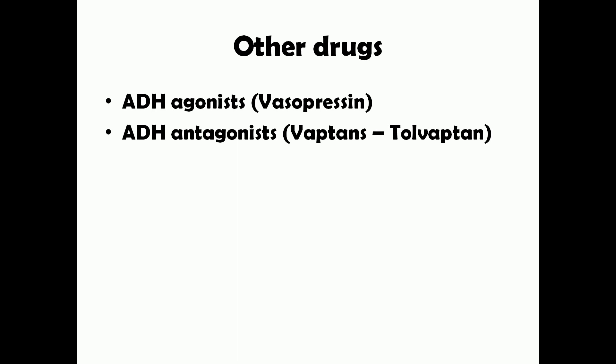Other drugs used as diuretics include ADH agonists such as vasopressin, and ADH antagonists called vaptans, such as tolvaptan.